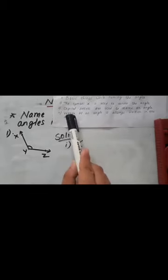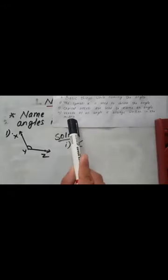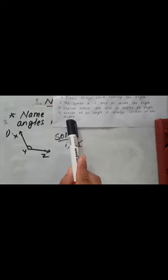Always you should use capital letters. Similarly, point three: the vertex of an angle is always written in the middle. While naming the angle, your vertex must lie in the middle. As I have already told you, an angle has two arms — here XY and YZ are the two arms.